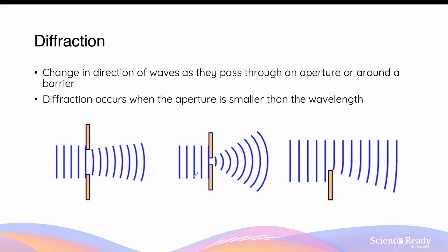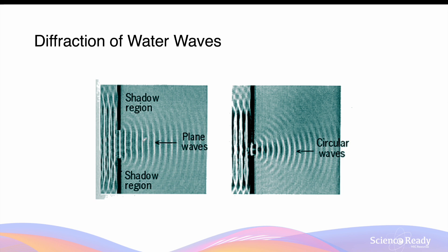What you need to know is that the degree to which diffraction occurs depends on how small the aperture or opening is that the wave has to travel through, and also on the wavelength of the wave. Typically, diffraction becomes a lot more obvious when the aperture is smaller than the wavelength of the wave. You can see this relationship by looking at two examples of a water wave transmitting through an opening between two barriers. In both cases diffraction occurs, but if we make the opening smaller, the effect of diffraction becomes a lot more apparent — the scattering effect becomes almost circular, described as circular waves in the diagram.